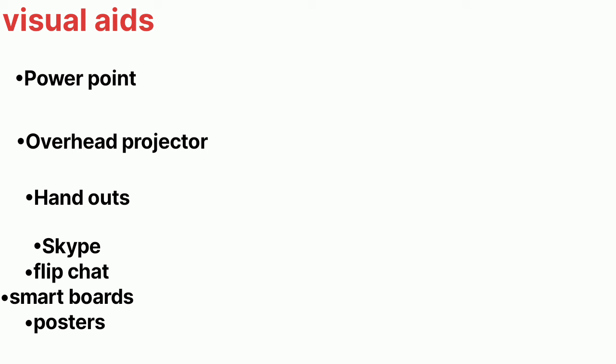Section 2.3 covers the following visual aids: PowerPoint (data projector), overhead projectors, handouts, video conferencing such as Skype, flipcharts, interactive whiteboards or smartboards, posters, and banners. The advantages and disadvantages of each will be covered.